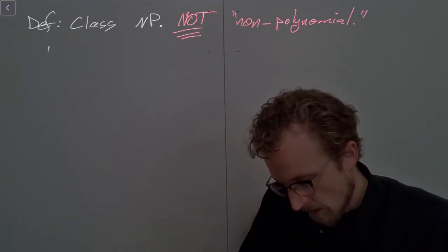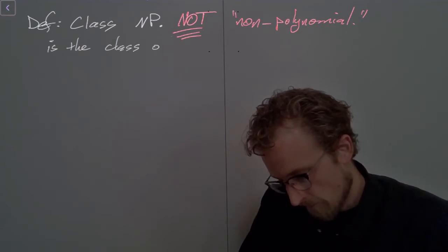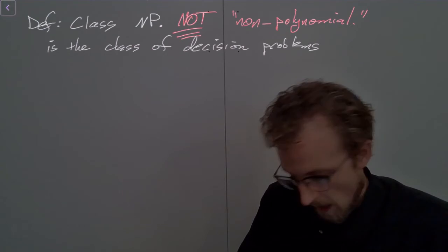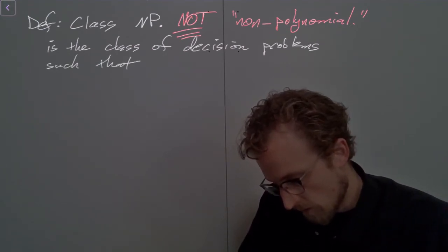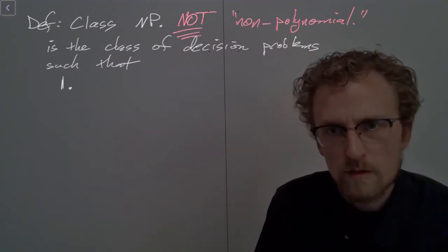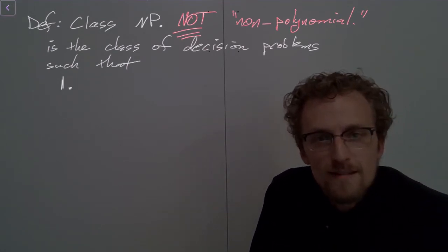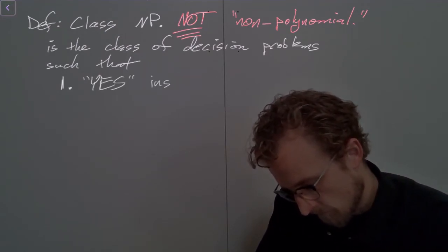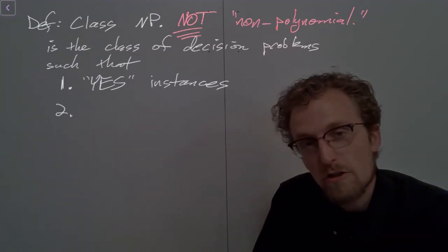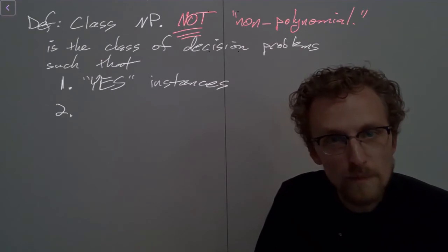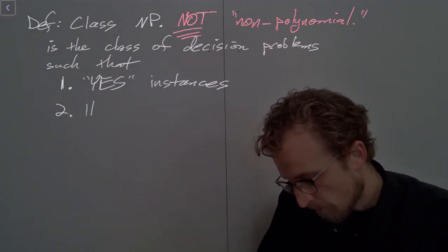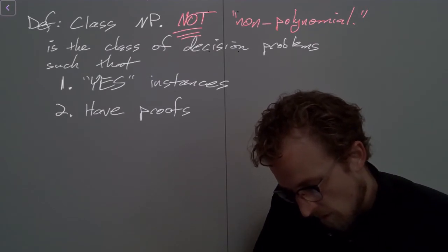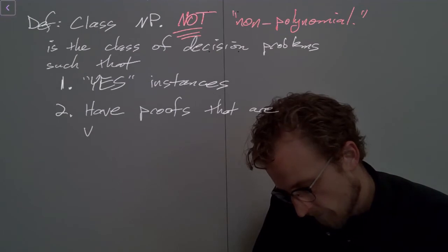So class NP is the class of decision problems such that — and there are two conditions here. Condition one: instances whose answer is yes, or yes instances. Condition two only applies to yes instances: yes instances have proofs that are verifiable in polynomial time. We don't know anything about no instances.